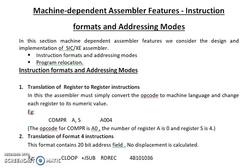If you remember about the registers in SIC and SIC/XE, there is a representation like A, X, L and there is an equivalent numerical value for each register. For example, the accumulator's numerical value is 0. So what the assembler does when a register-to-register instruction comes is it converts the opcode into its corresponding machine language equivalent and then the register to its equivalent numerical value.